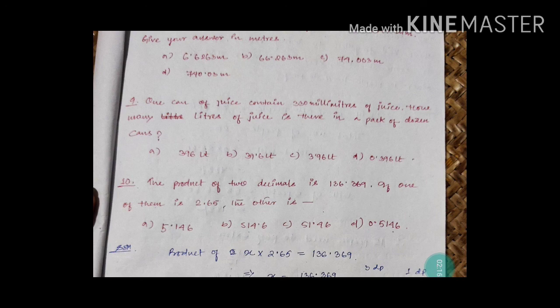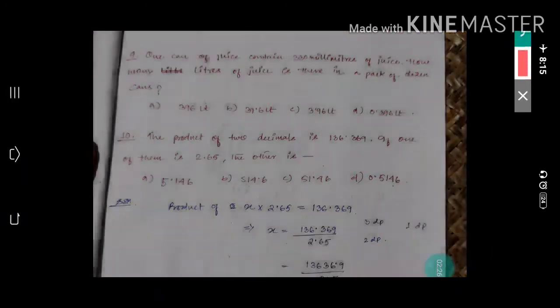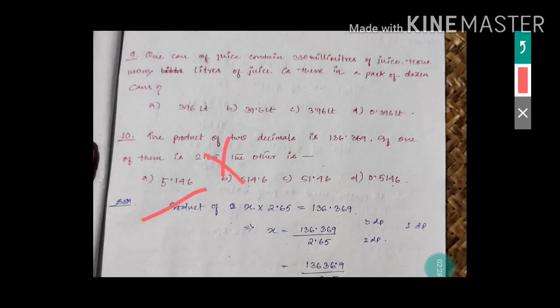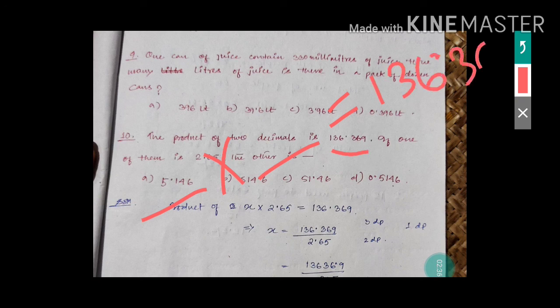The product of two decimals is 136.369. If one of them is 2.65, find the other. Suppose the two numbers are: one number multiplied by another gives 136.369. The number 2.65 is given, so you have to find the other one.